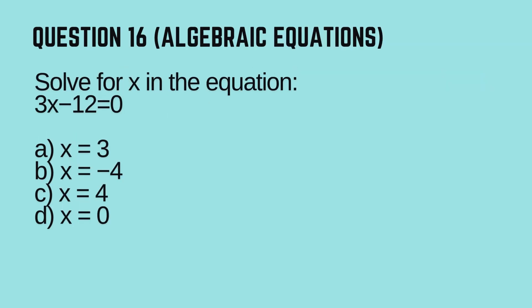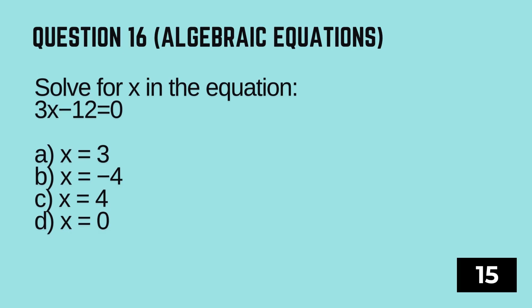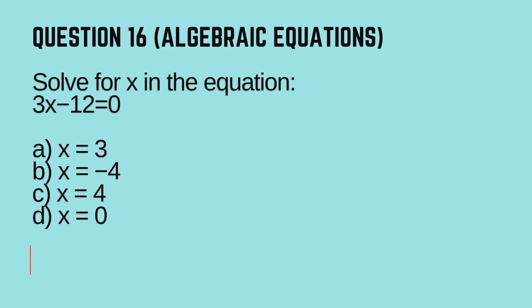Question 16. Algebraic Equations. Solve for X in the equation: 3X minus 12 is equal to 0. Options: A. X equals 3, B. X equals negative 4, C. X equals 4, D. X equals 0. Timer starts now. The correct answer is C — X equals 4.